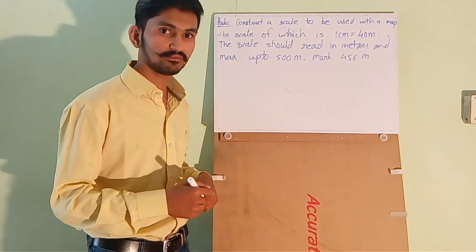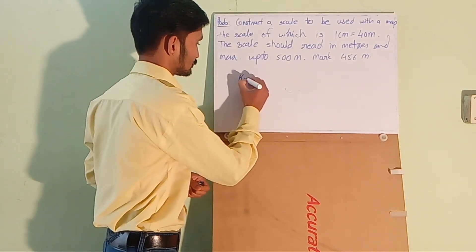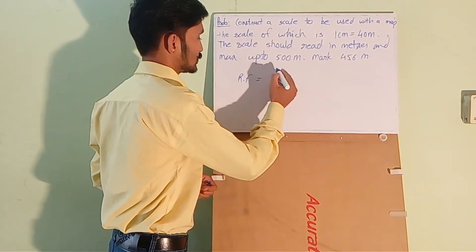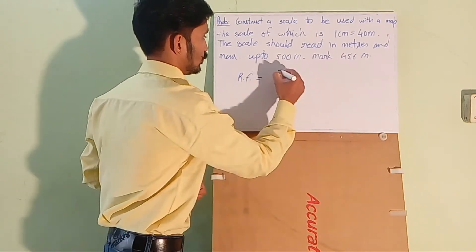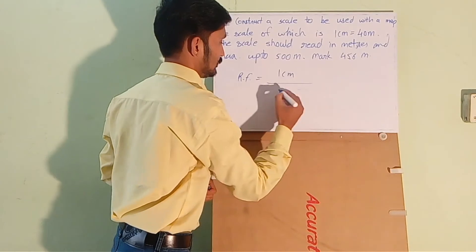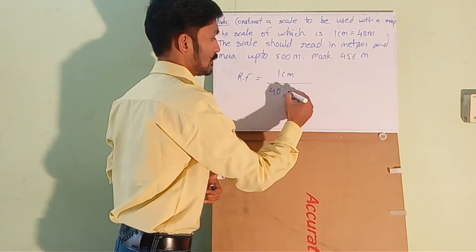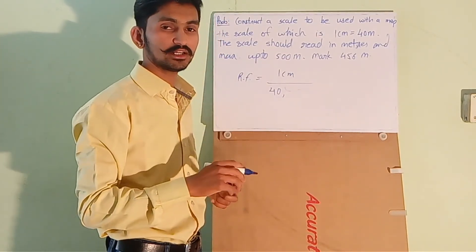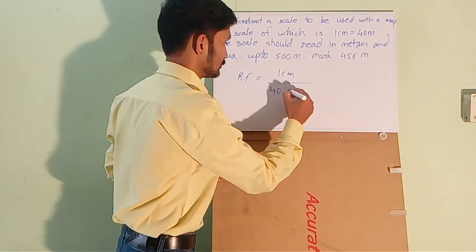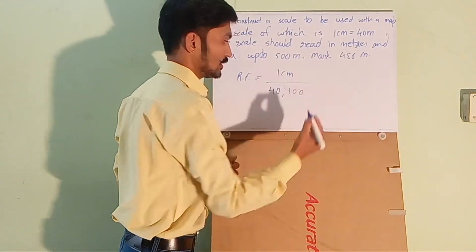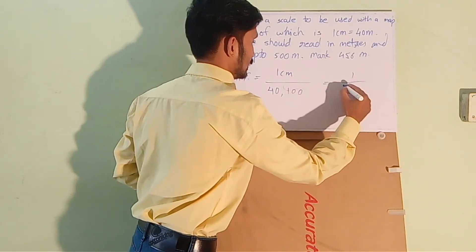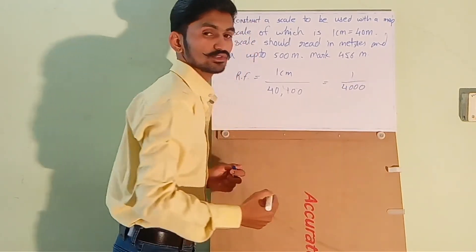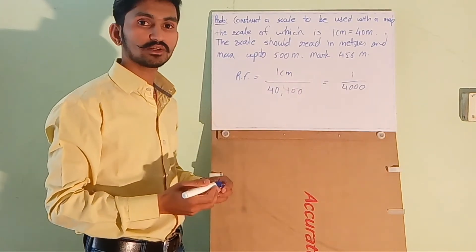Okay, so let's calculate the RF first. RF is equals to 1 centimeter is showing 40 meter. 1 centimeter divided by 40 meter but we have to convert meter into centimeters multiplied by 100 simply. So the RF will be 1 by 4000.